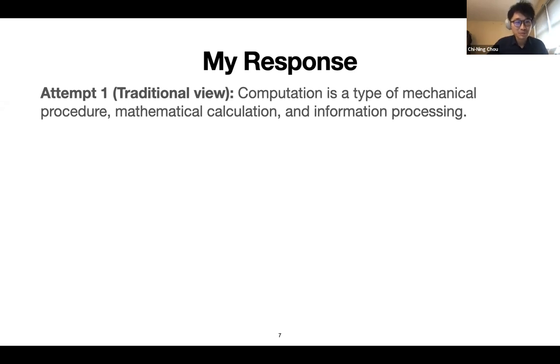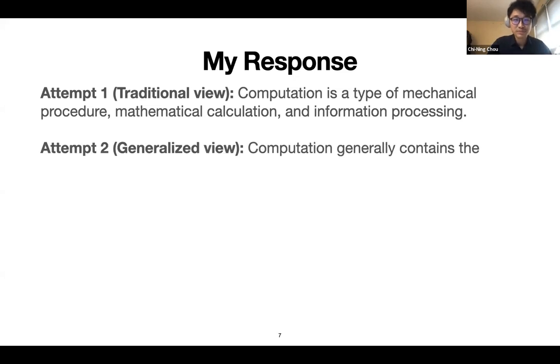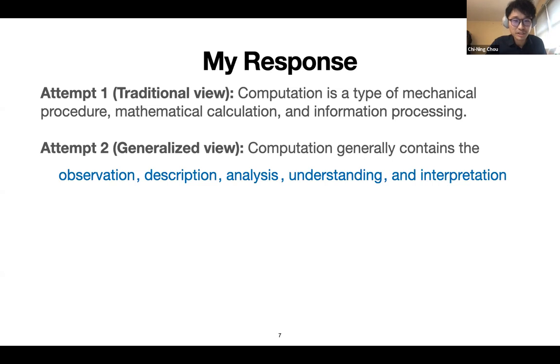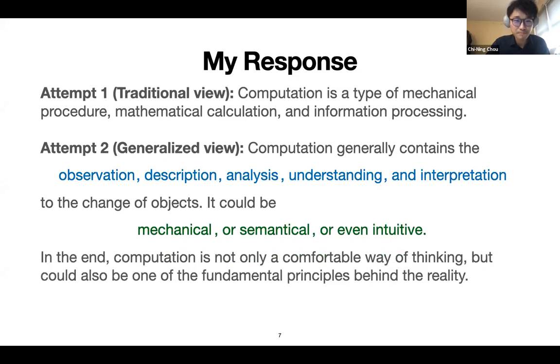Maybe the first attempt will be a more traditional view - as a computer scientist in the beginning, we think of computation as a type of mechanical procedure, mathematical calculation, or information processing. But through the discussion, especially when we looked into physics and biology, I also want to give it a second shot. I want to have a more generalized view on what computation is, and this is one main thing I want to convey in this mini course. The more general view, at least for me, is that computation generally contains the observation, description, analysis, understanding, and interpretation of the change of objects.